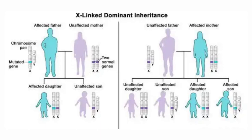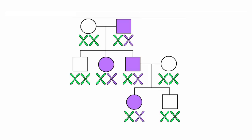A pedigree example showing autosomal dominant pattern: the father has one defective chromosome. In the next generation, one male and one female are affected. The affected male marries a normal female, and one daughter is affected — typical autosomal dominant pattern of inheritance.